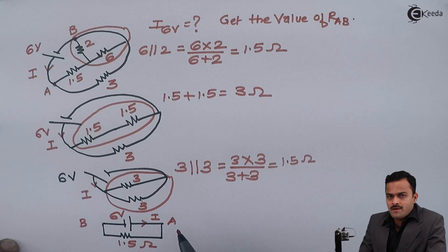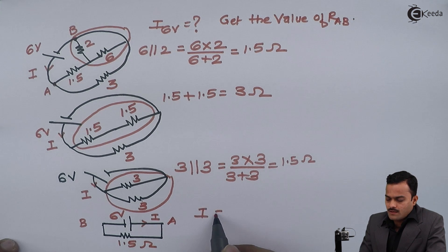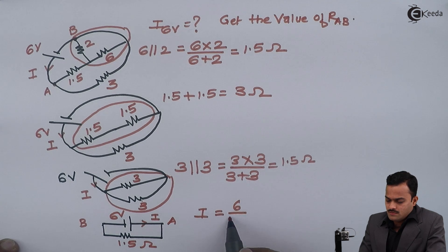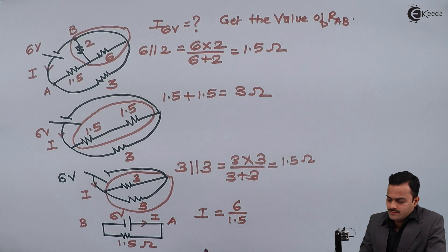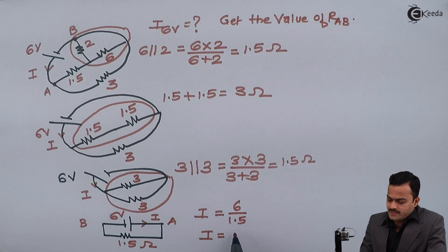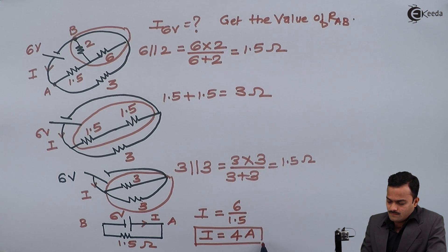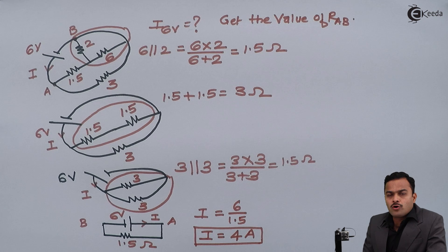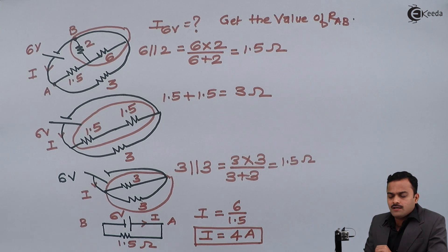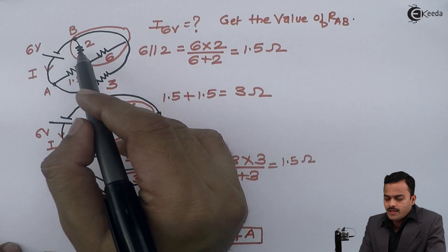By Ohm's law, I equals 6 divided by 1.5, so the current given by the battery is 4 ampere.